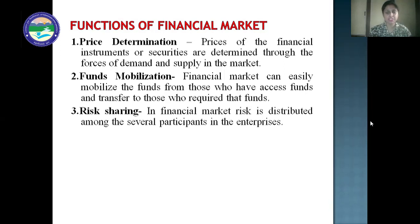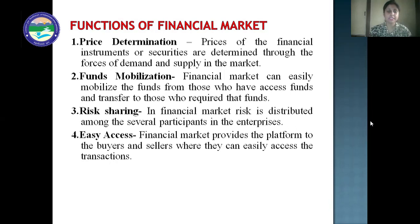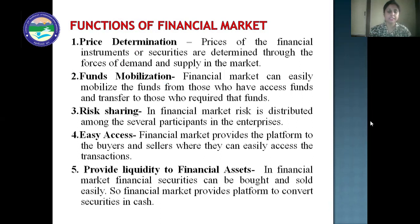Third is risk sharing. In the financial market, risk is distributed among several participants in the enterprise. Fourth is easy access — the financial market provides a platform to buyers and sellers where they can easily access transactions. Next is providing liquidity to financial assets. Financial securities like shares, bonds, and debentures can be bought and sold easily. The financial market provides a platform to convert securities into cash — for example, NSE and BSE, which are stock exchanges where trading takes place.